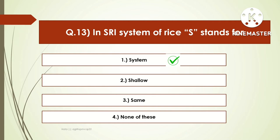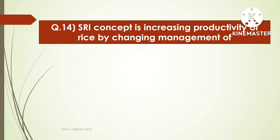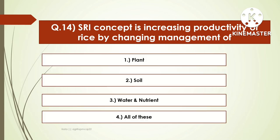The SRI concept is increasing productivity of rice by changing management of — options are plant, soil, water and nutrients, or all of these. The right answer is all of these.